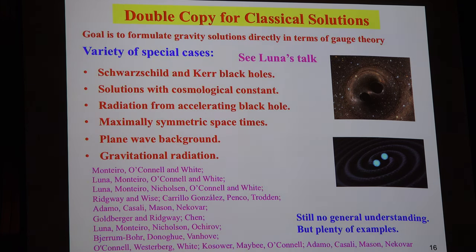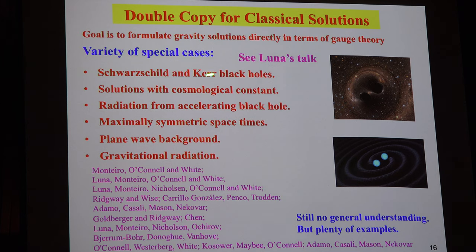I've been talking about the double copy for scattering amplitudes, and an obvious question is whether the same ideas hold for general classical solutions — can you take a solution of general relativity and interpret it in terms of a double copy? We don't know the answer in general, but we have plenty of examples: black holes, cases with cosmological constant, radiation cases. What we need is some young, smart person to look at the pattern and try to understand how to think about this in a way that's actually very general.